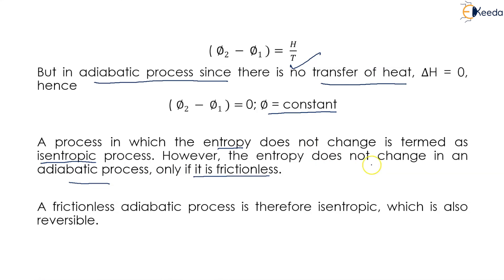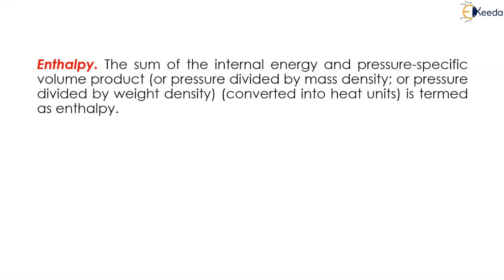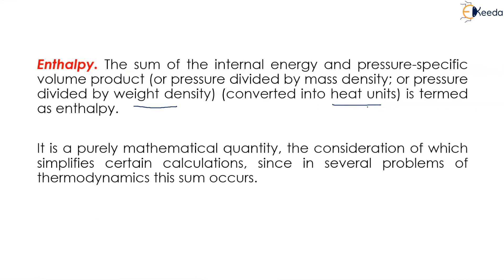A frictionless adiabatic process is therefore termed isentropic, which is also reversible. Next is enthalpy. The sum of the internal energy and the pressure-specific-volume product — that is, either pressure divided by mass density or pressure divided by weight density — is termed as enthalpy, expressed in heat units. It is a purely mathematical quantity whose consideration simplifies certain calculations, since it frequently occurs in problems of thermodynamics. Thank you.